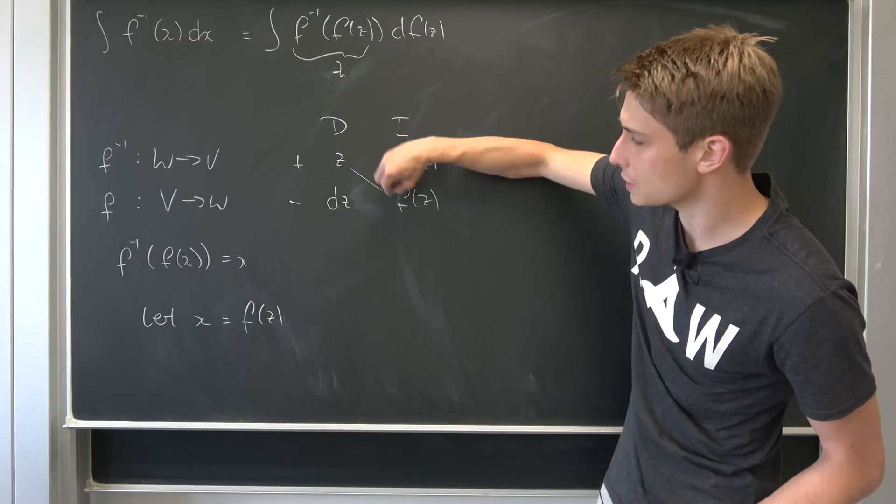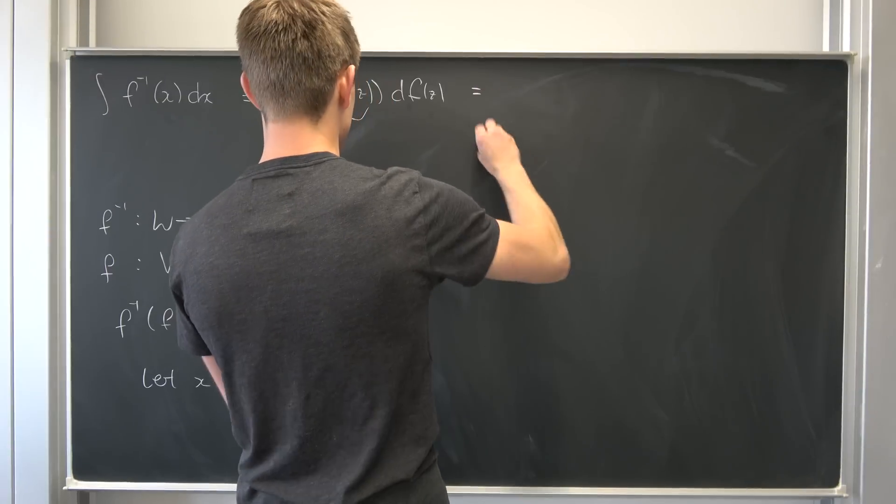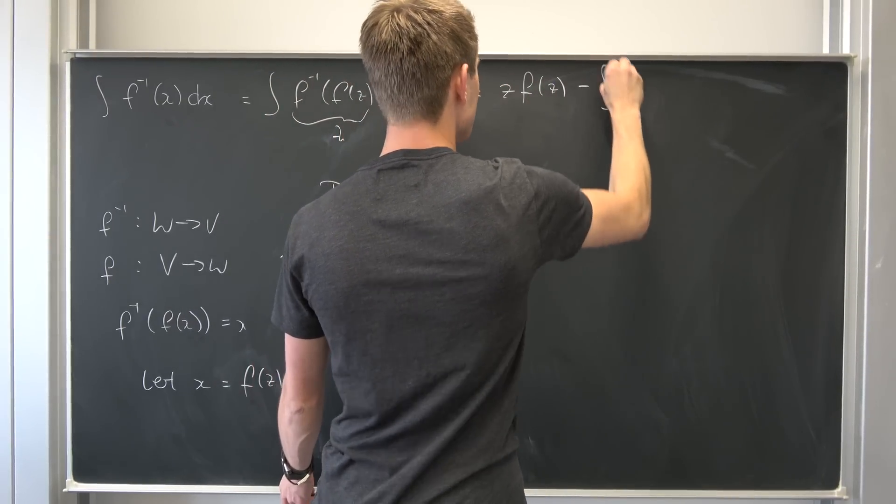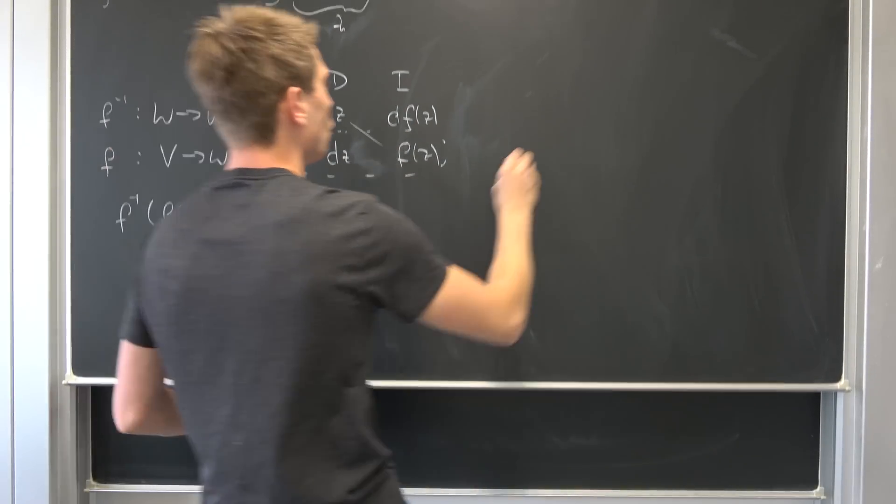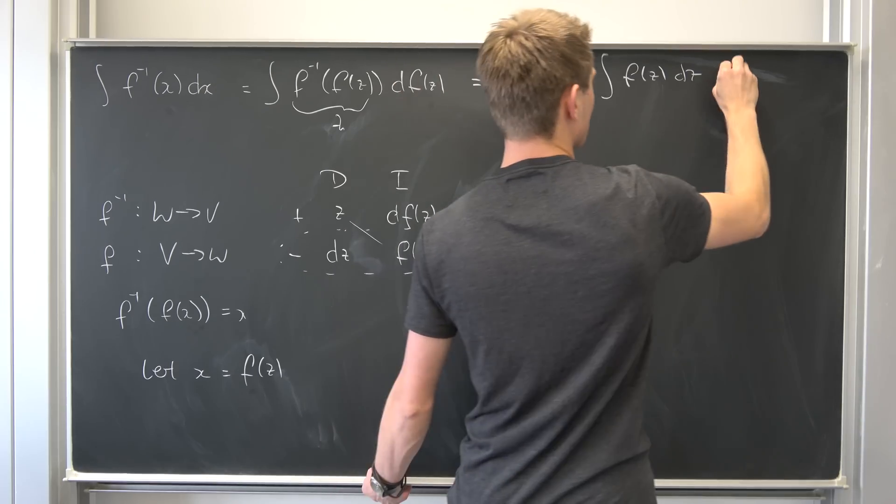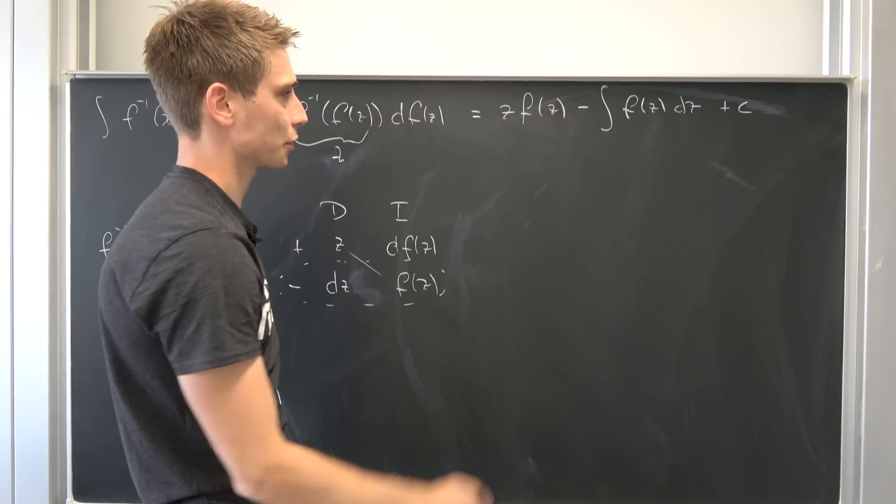So now we have to multiply this together and take the integral of this thing and then we are basically done. So we end up with z times f of z and then minus integral of f of z dz plus some arbitrary constant c. Don't forget that. It's an indefinite integral at this point.